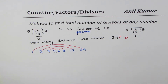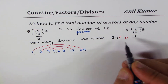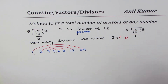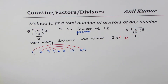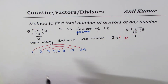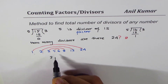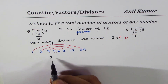For smaller numbers this method is easy, but if I give you a very big number like 1800 or 2005-something, it becomes difficult. For those numbers we need an alternate method, which I'll discuss in this video. The alternate method is to do prime factorization.